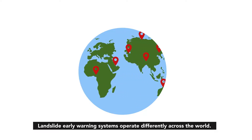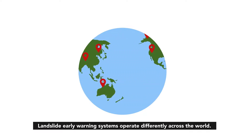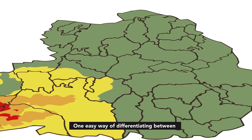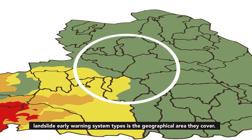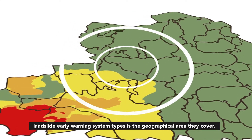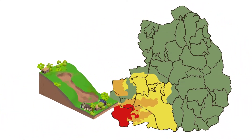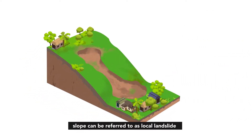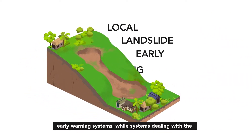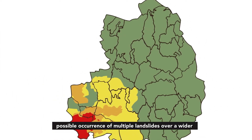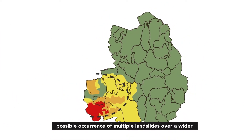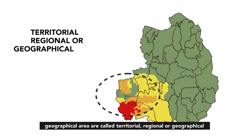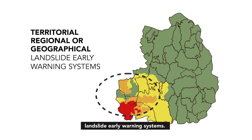Landslide early warning systems operate differently across the world. One easy way of differentiating between landslide early warning system types is the geographical area they cover. Systems addressing a single landslide on a specific slope can be referred to as local landslide early warning systems, while systems dealing with the possible occurrence of multiple landslides over a wider geographical area are called territorial, regional or geographical landslide early warning systems.